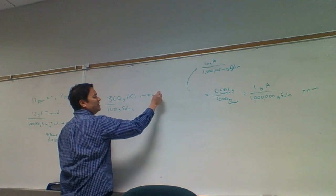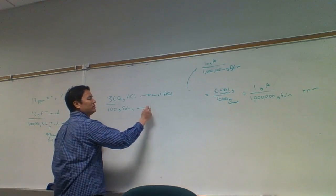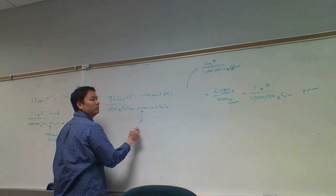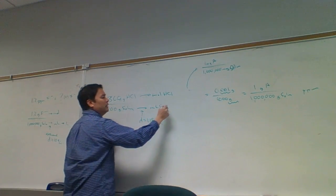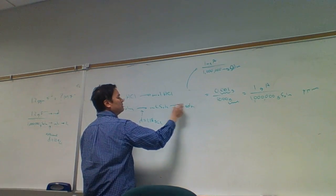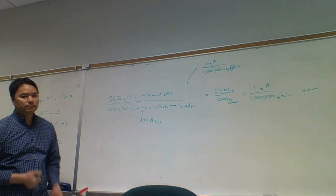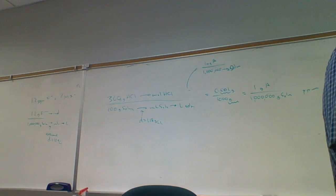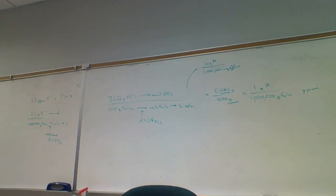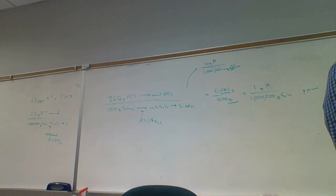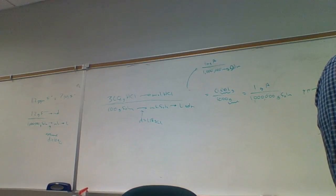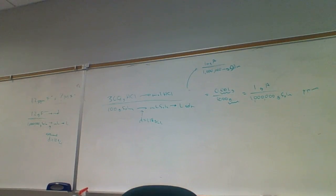When dealing with PPM and PPB and PPT we can assume density is close to water because it's very dilute, but for concentrated solutions we need the actual density. For example, 46% sucrose solution requires the given density. Similarly, 11% ethanol by mass — they give us the density because it's highly concentrated. But for fluoride, we didn't need the density since it was very dilute.